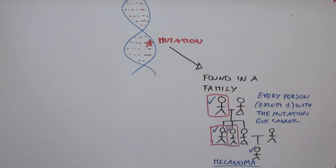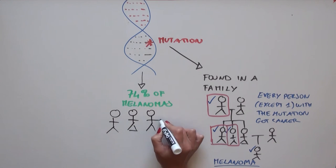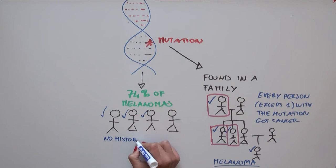But the scientists also found evidence that this mutation is present in 74% of melanoma patient cell lines that didn't have a family history of melanoma. That's a huge percentage. In those patients, the mutation was caused by UV light damage from sun exposure.